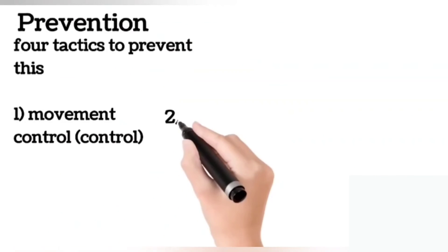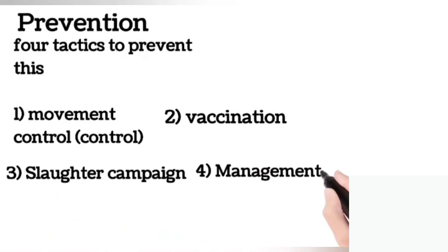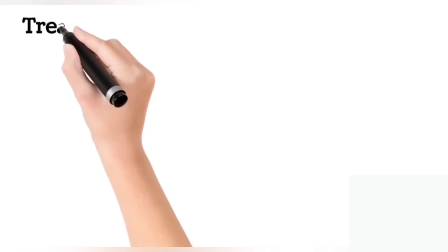Prevention: There are four tactics to prevent this. The first is movement control. Second is vaccination. Third is slaughter campaign. And the fourth is management strategies.